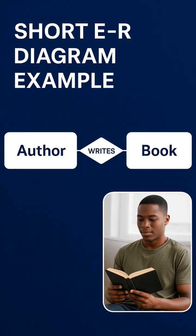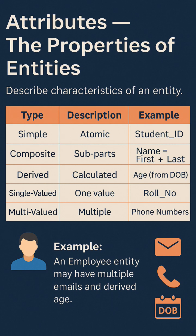Each entity has attributes which define their properties: simple ones like Student ID, composite like name (first or last), derived like age from date of birth, or multi-valued like multiple phone numbers.